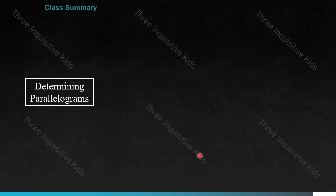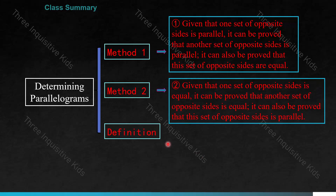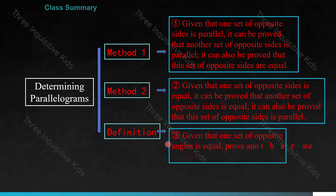Class summary. Today we determined parallelograms. For method one, given that one set of opposite sides is parallel, you can prove that another set is also parallel and equal. For method two, you are given that one set of opposite sides is equal, and you prove another set is equal and parallel. For method three, according to definition, given one set of opposite angles are equal, you prove the other set of opposite angles are equal as well. This is a perfect time to pause the video and take notes.